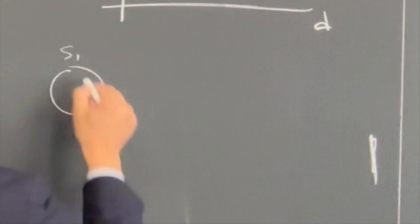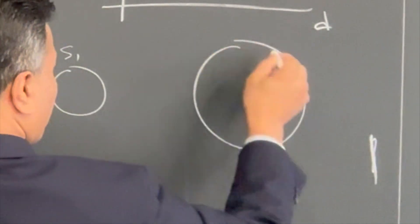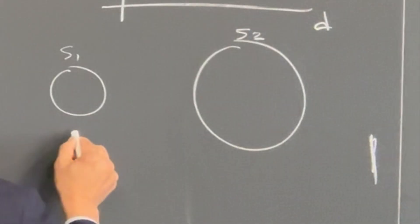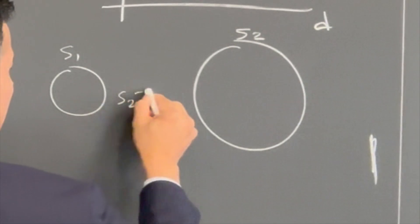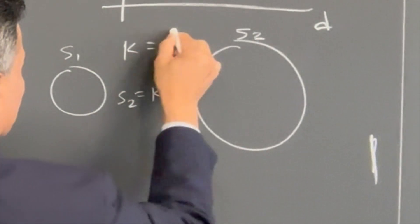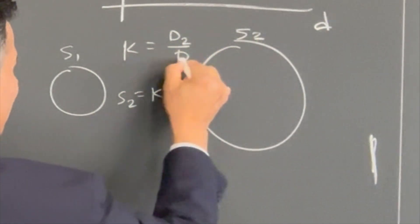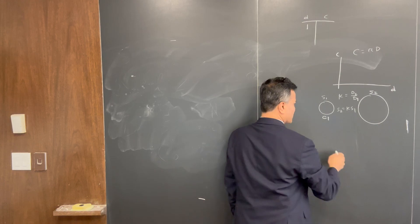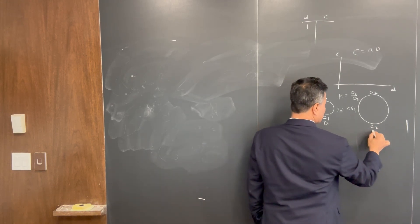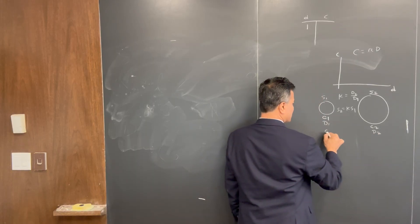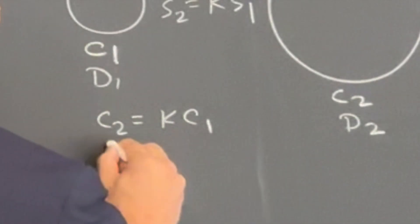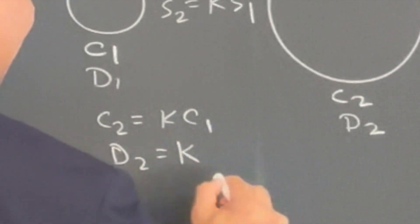Consider a small circle s1 and a big circle s2. Then s2 is k times s1, where k equals d2 over d1. This one is c1, this one is c2, this one is d1, this one is d2. So c2 equals k times c1, and d2 equals k times d1.